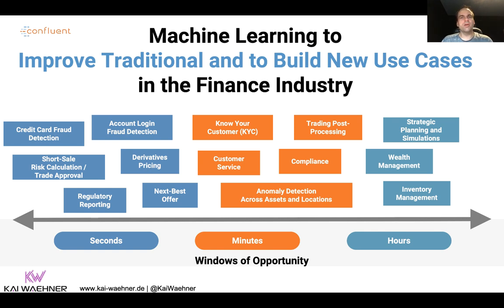On the other side, I will also talk about innovative use cases — for example, customer service and how you can leverage chatbots and automated speech translation. This helps automate many processes, reduce cost, and also make the customer happier if it works well, because then you don't have a long waiting time when you call customer service. There are different windows of opportunity: some are real-time, some are minutes, and some are even hours or batch. Kafka is not just for real-time processing — it can be part of batch analytics for training a model.